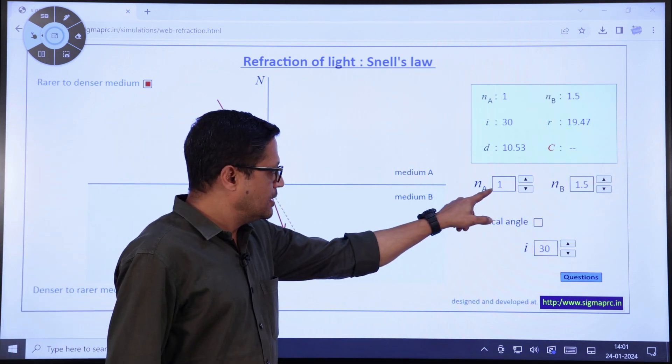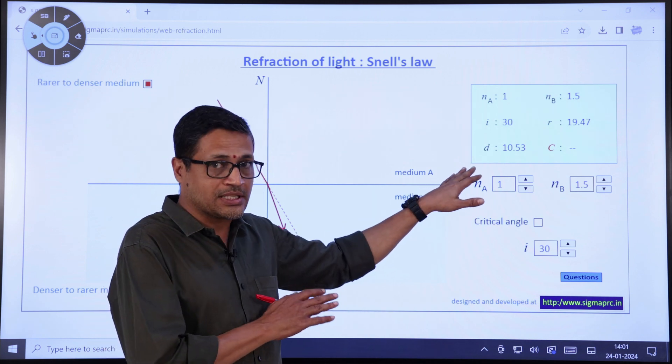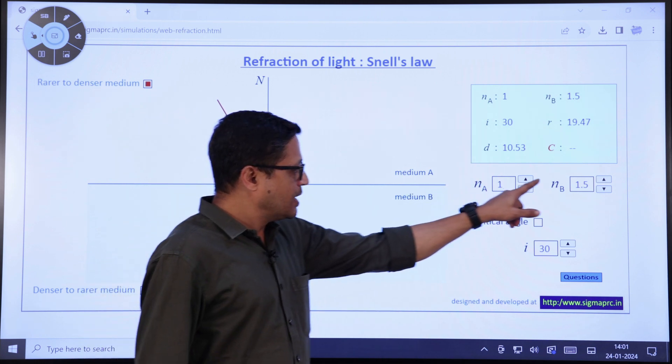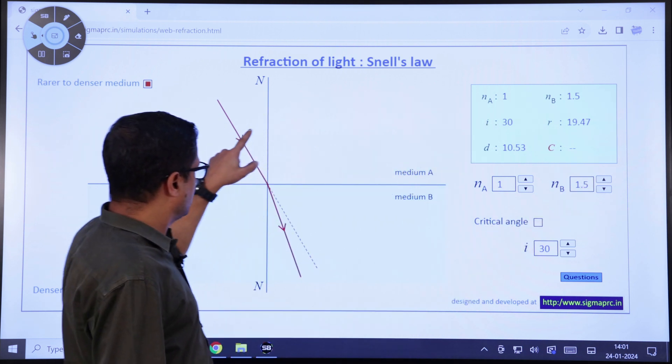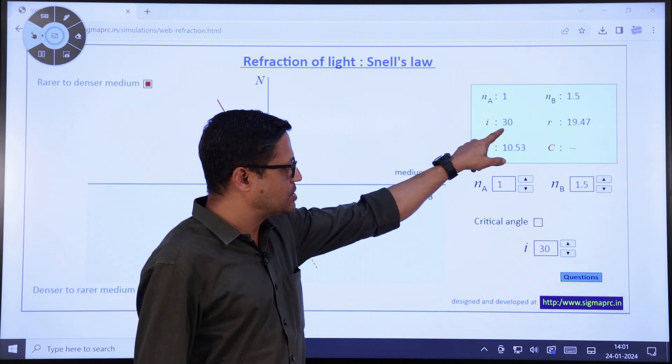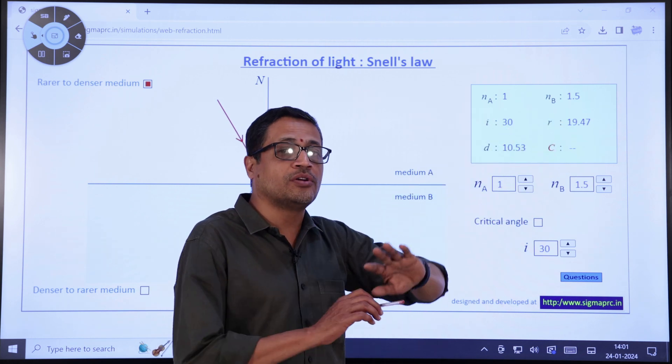This is the refractive index of the first medium. We are going to spend more time understanding what refractive index is. This is the refractive index of the second medium. This is the angle of incidence in the first medium, which is 30 degrees, but the angle of refraction in the second medium is 19.47 degrees. The ray has definitely deviated from its path.